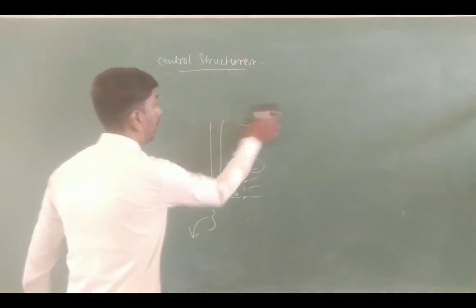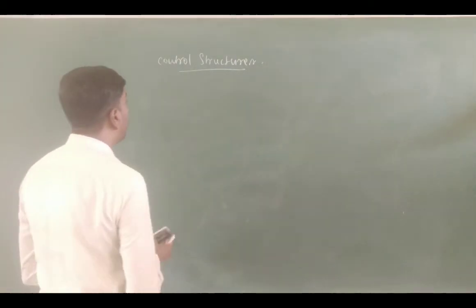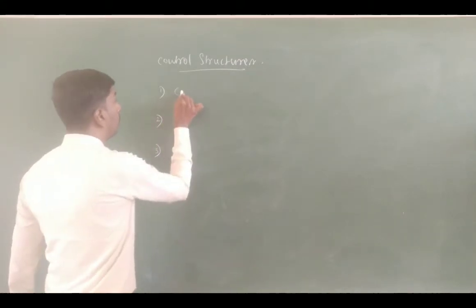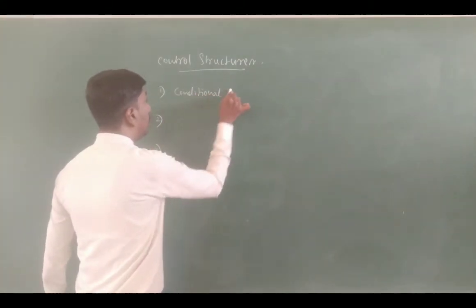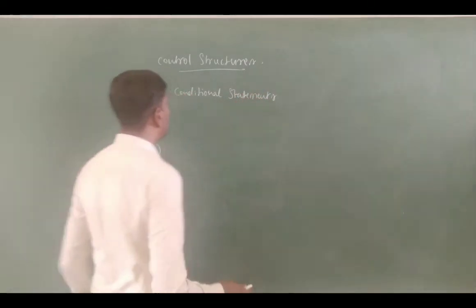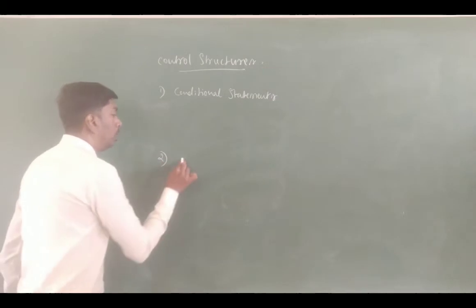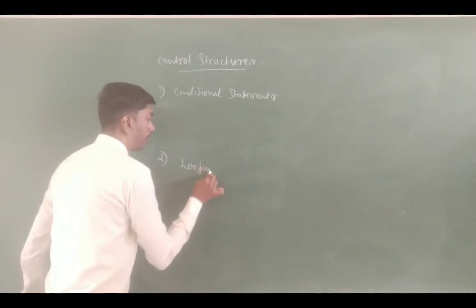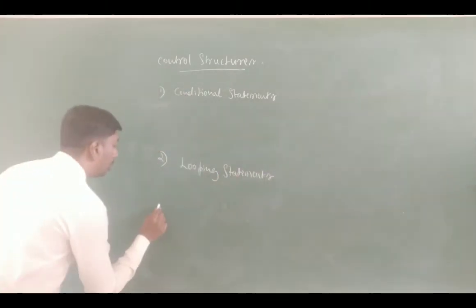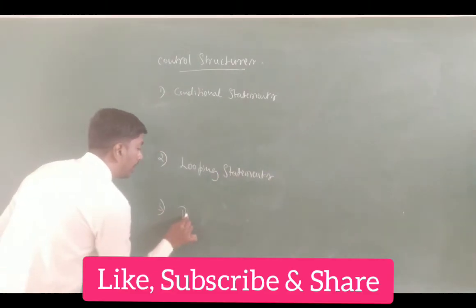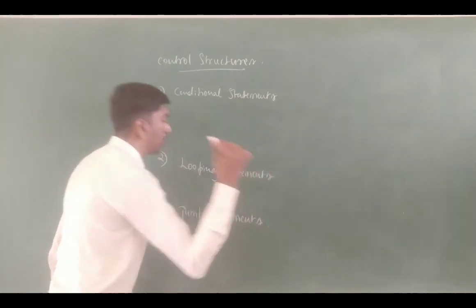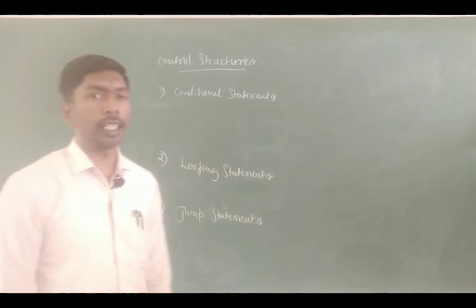So now control structure. Mainly we have three different types: conditional statements, looping statements, and jump statements.